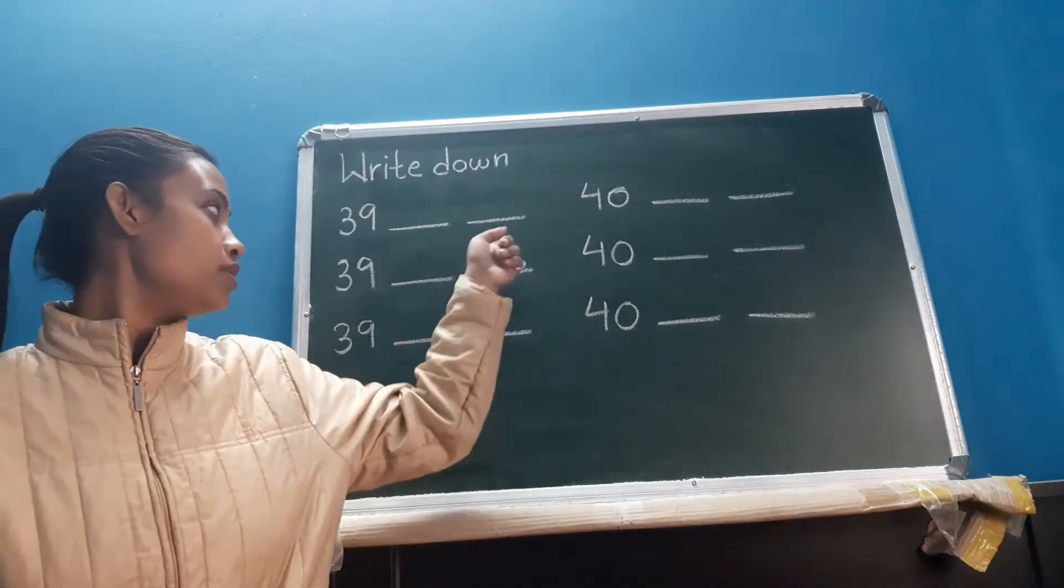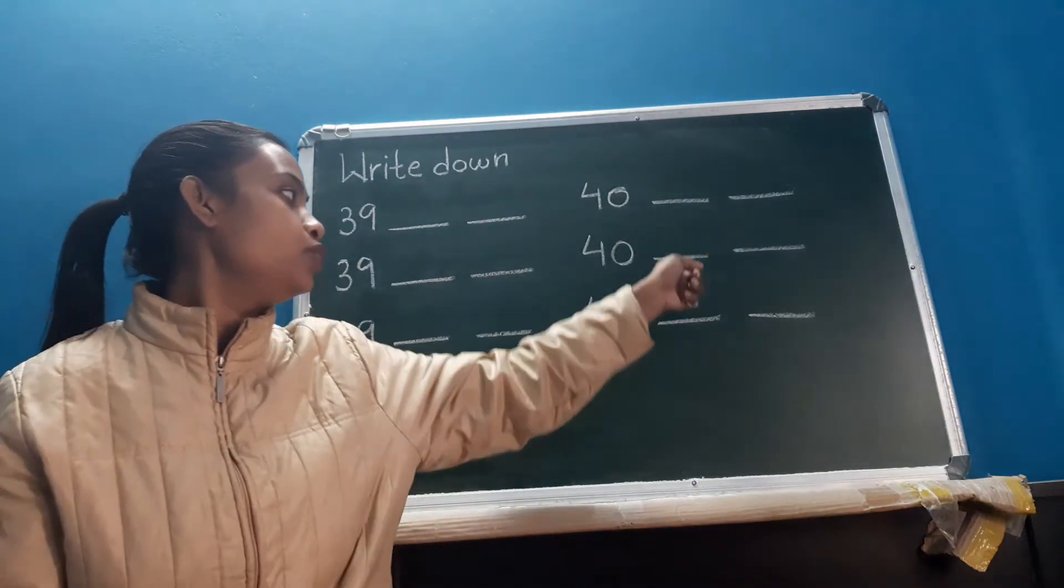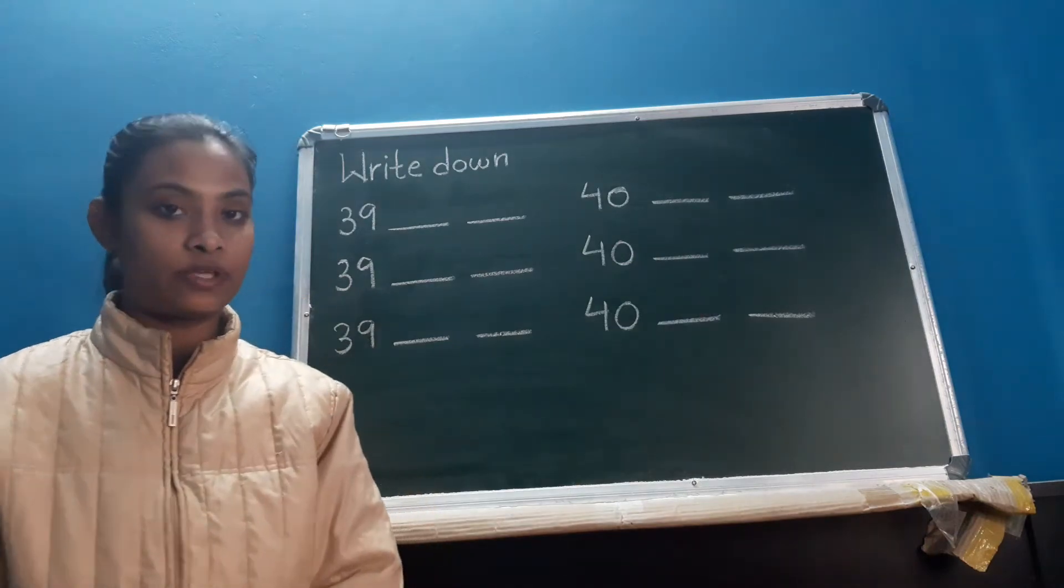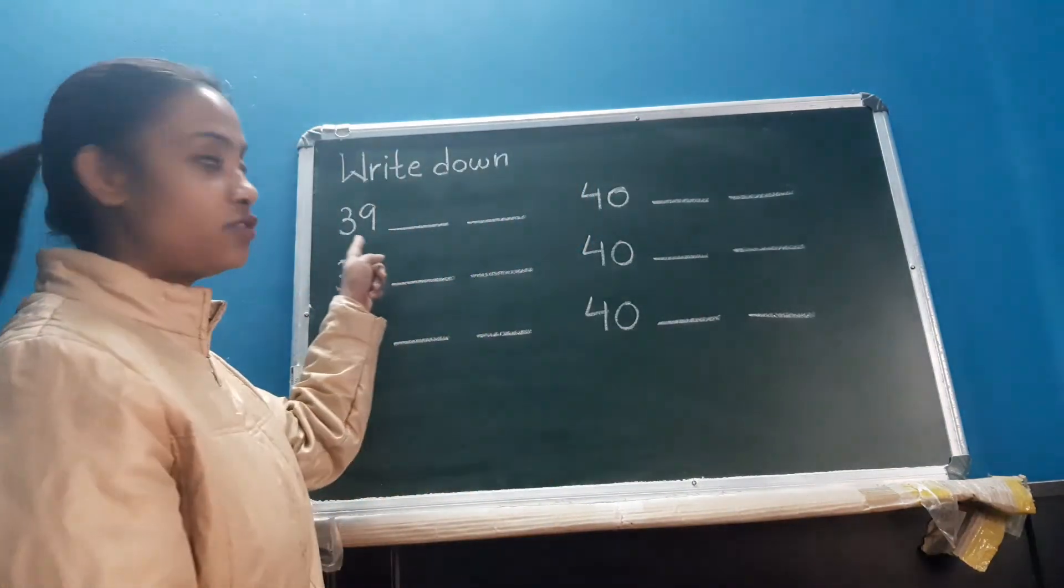Okay children? As you can see here, there are blank spaces. You have to write over these blank spaces. Okay, first is 39.